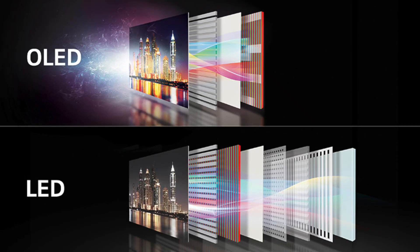OLED displays can be made thinner and can be made flexible because they don't require that back layer needed for backlighting. This means you can have smaller phones, and you'll usually find that better TVs — the OLED TVs — are really, really thin, almost as thin as your smartphone. That's what OLED allows us to do right now in the current industry.